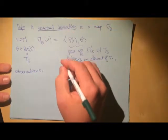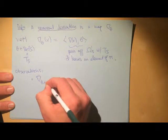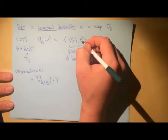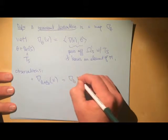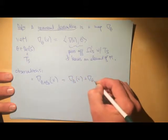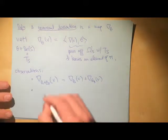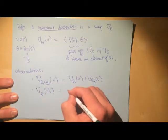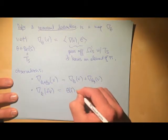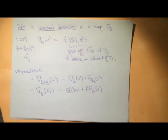Some quick observations: the covariant derivative nabla_theta is linear, so nabla_{theta1 + theta2}(v) = nabla_{theta1}(v) + nabla_{theta2}(v). Also, nabla_theta(f·v) = theta(f)·v + f·nabla_theta(v), which again reflects the Leibniz rule.